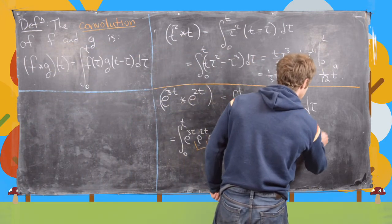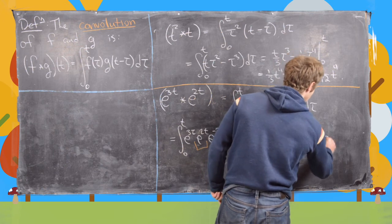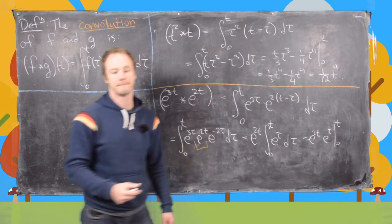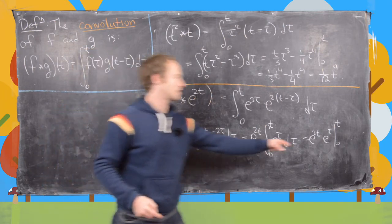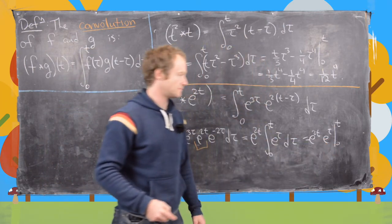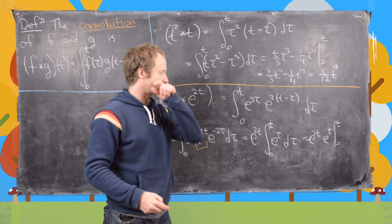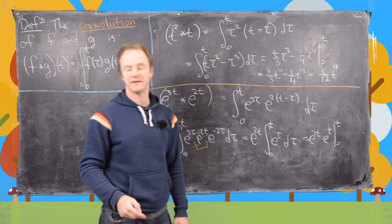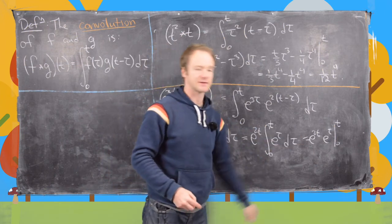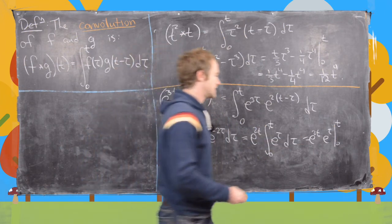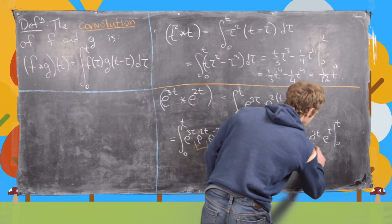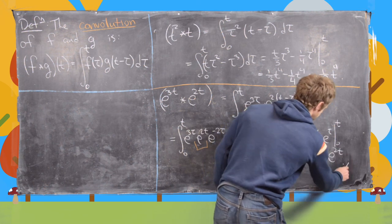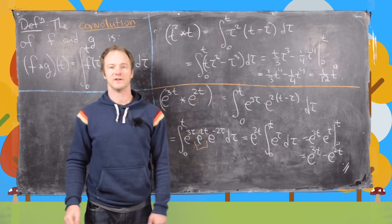We have e^(2t) times e^τ evaluated from 0 to t. Evaluating at t gives e^t, and at 0 gives e^0 = 1, and in both cases we multiply by e^(2t). So the result is e^(3t) minus e^(2t). That's the end of the video.